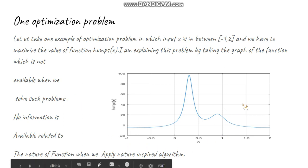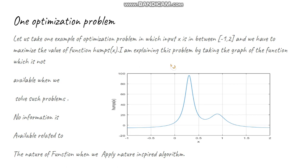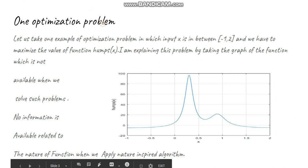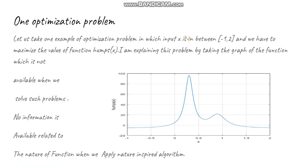I will show this with one example. Here you can see we have a graph in which we need to identify the maximum value of this function. Although when we apply a randomized algorithm, we don't have access to this graph — I am showing it here just for explanation. There are some terms related to optimization problems that you must know when writing nature-inspired algorithms.